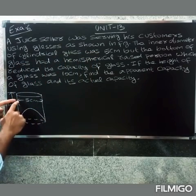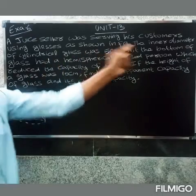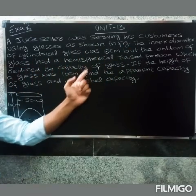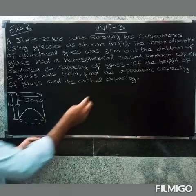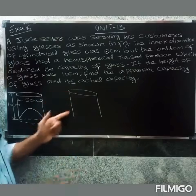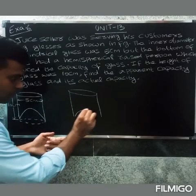But the bottom of the glass had a hemispherical raised portion which reduces the capacity of the glass. The hemispherical portion at the bottom reduces the amount of juice the glass can hold.